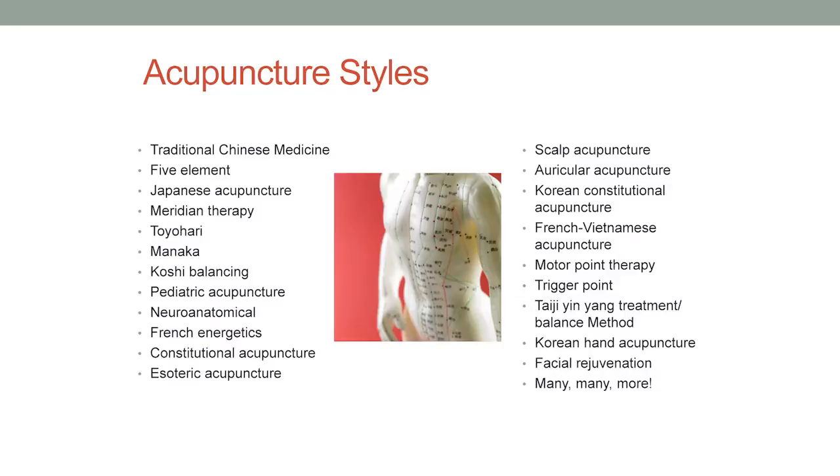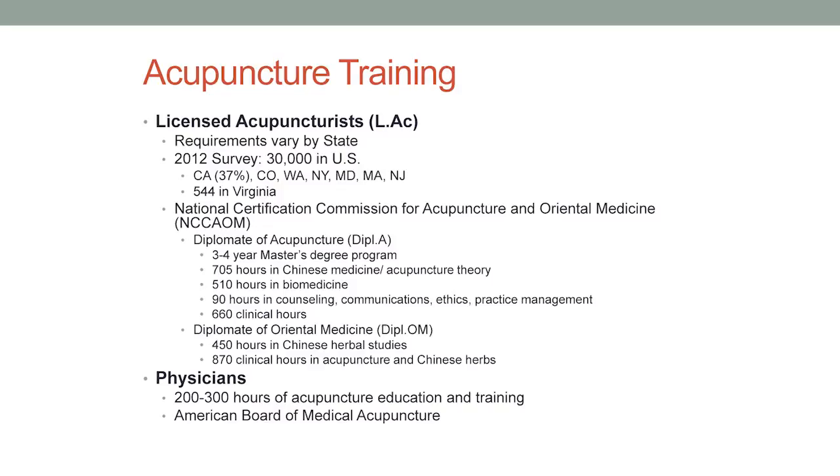There are pretty much as many styles of acupuncture as there are acupuncturists, but these are some of the major schools and theories. What I'm going to be talking about today is traditional Chinese medicine, which is one school — but just know that there are many other ways in which diagnosis is being done.